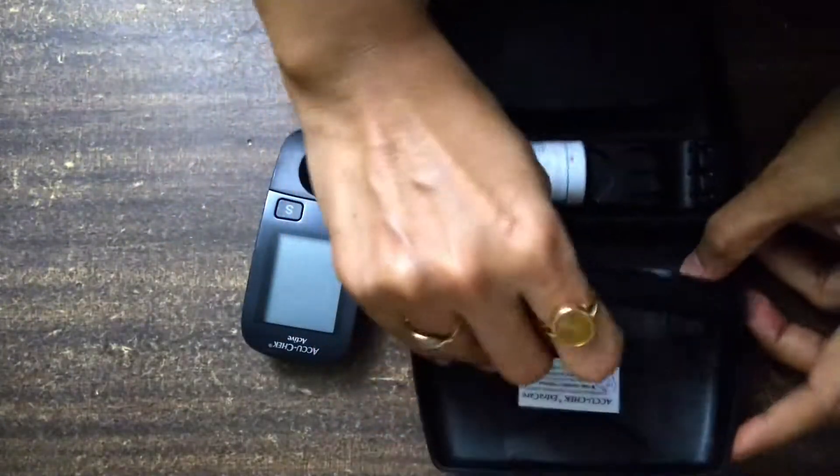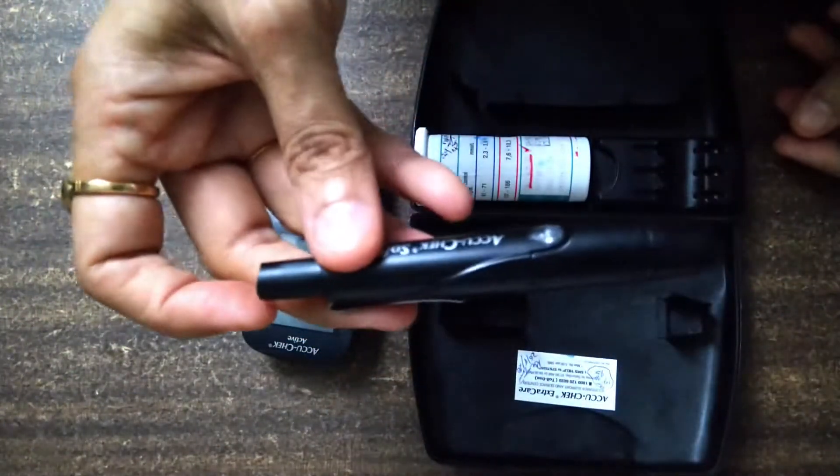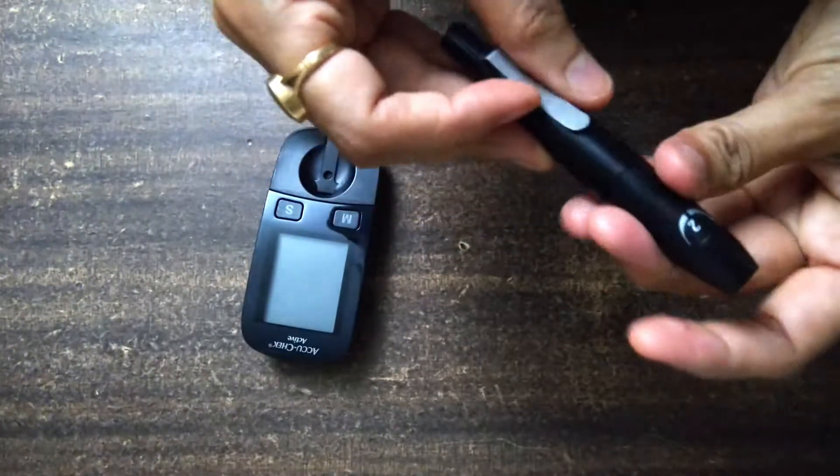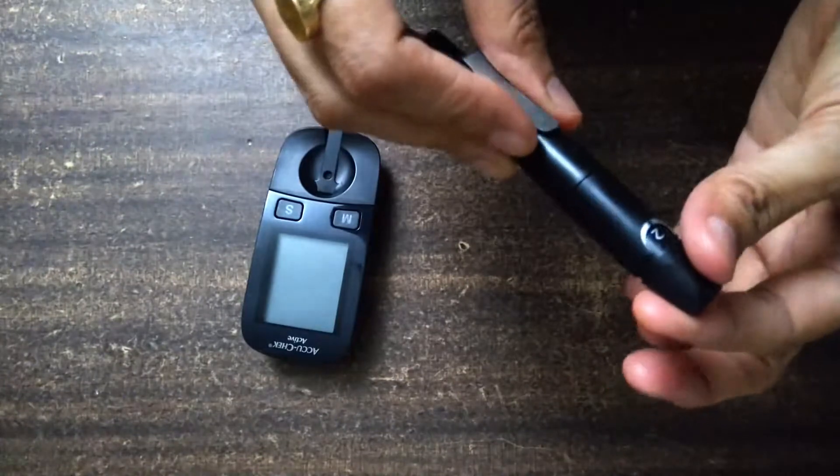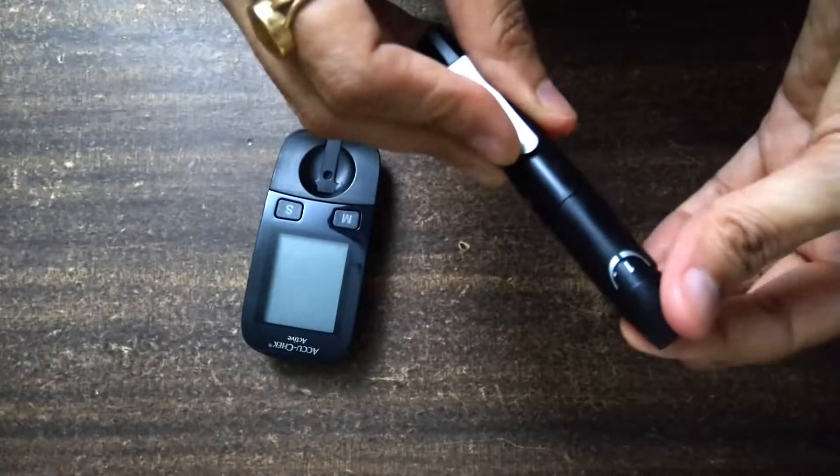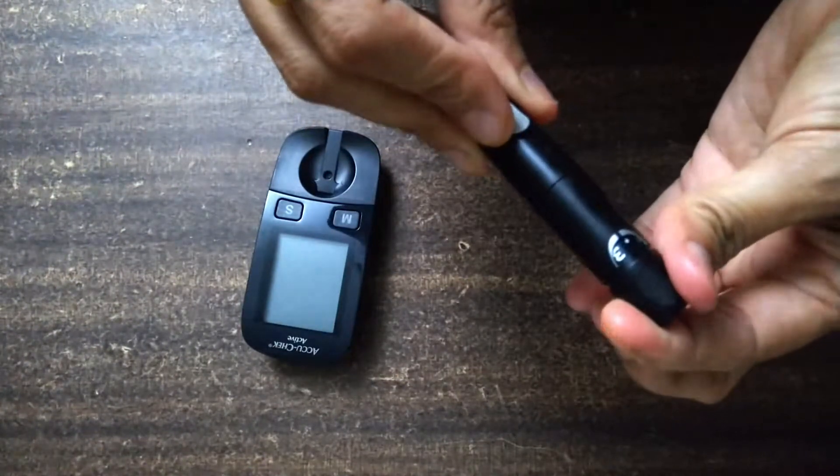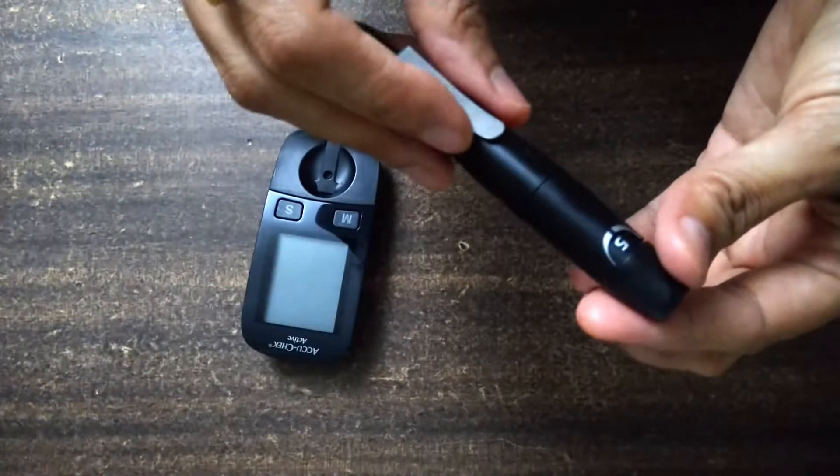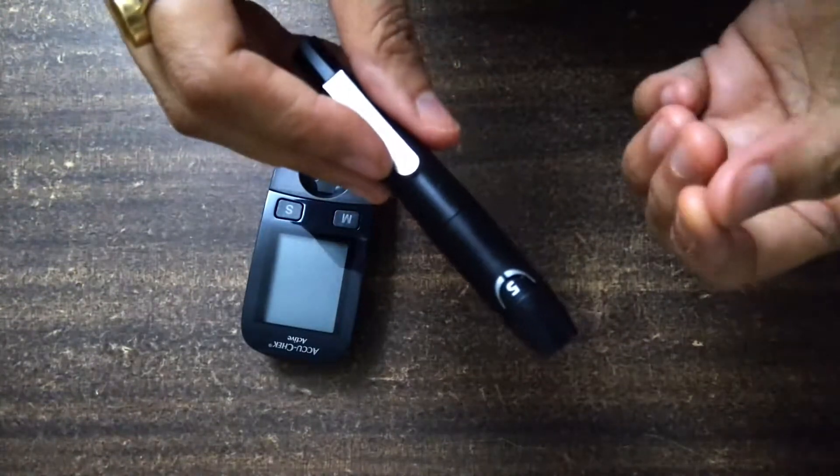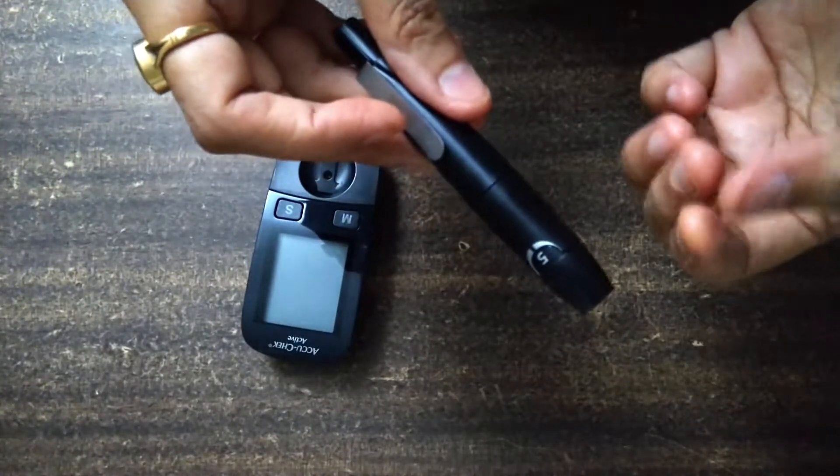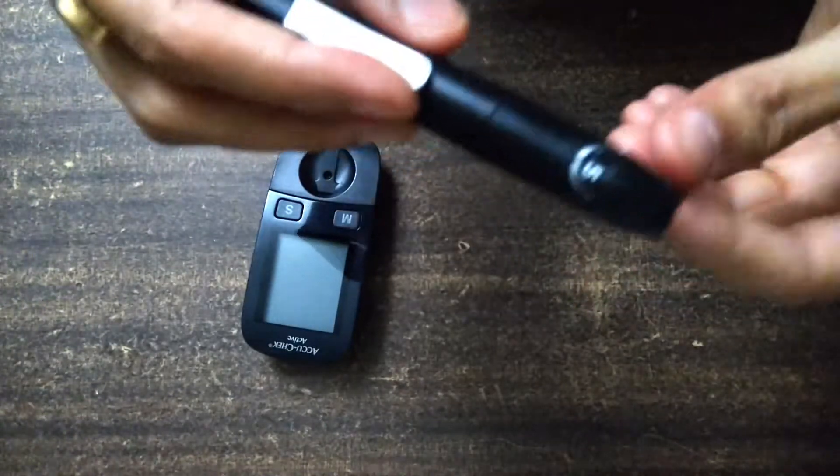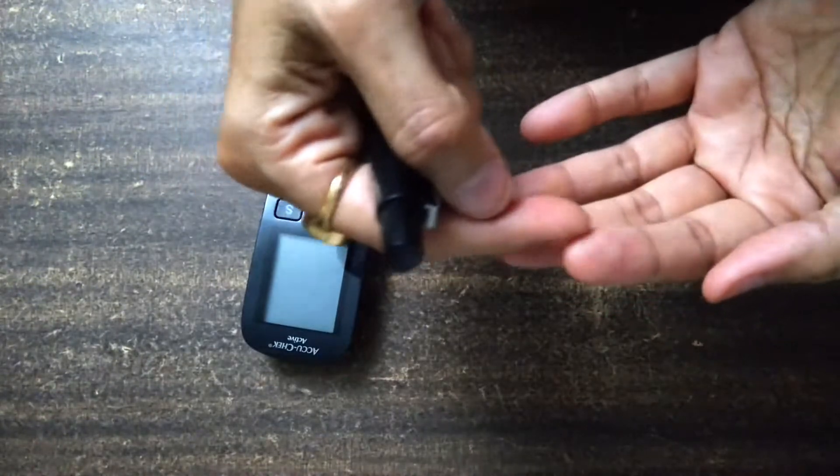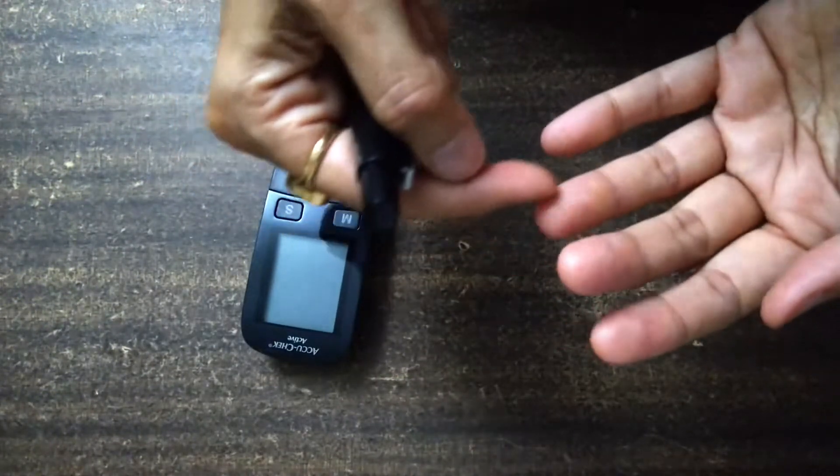The second important part is lancing device. In this case, you will see that you will see different numbers here. If we rotate the portion here, 1, 2, 3, 4 and 5. You can do these numbers to five numbers. This will show you how much depth you should. As someone's skin is thin or thick, accordingly you can use the depth. If we prick it for your fingers, we will keep it in place.